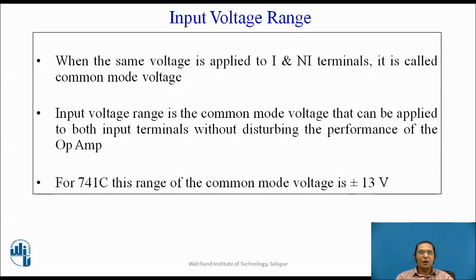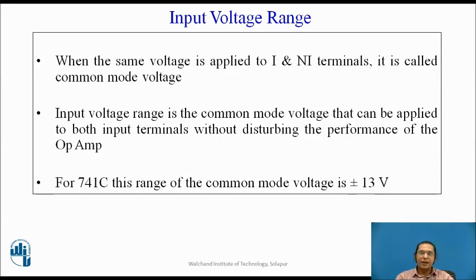The next parameter is the input voltage range, which specifies the maximum input voltage that can be applied to the operational amplifier. Since input is given at the inverting and non-inverting terminals, when the same voltage is applied to both, it is called the common mode voltage. Input voltage range is the common mode voltage that can be applied without disturbing or damaging the op-amp. For 741C, this range is between plus and minus 13 volts.